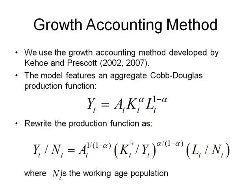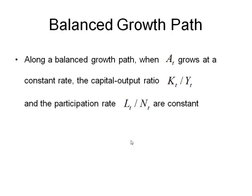And then there's Lt over nt. Lt over nt is labor — Lt is labor supply and nt is the working age population, meaning the number of people aged over 15 and under 64. So ages 15 to 64 is the working age population. Lt over nt denotes the participation rate of labor — so among the population between 15 and 64, how many of them are working?